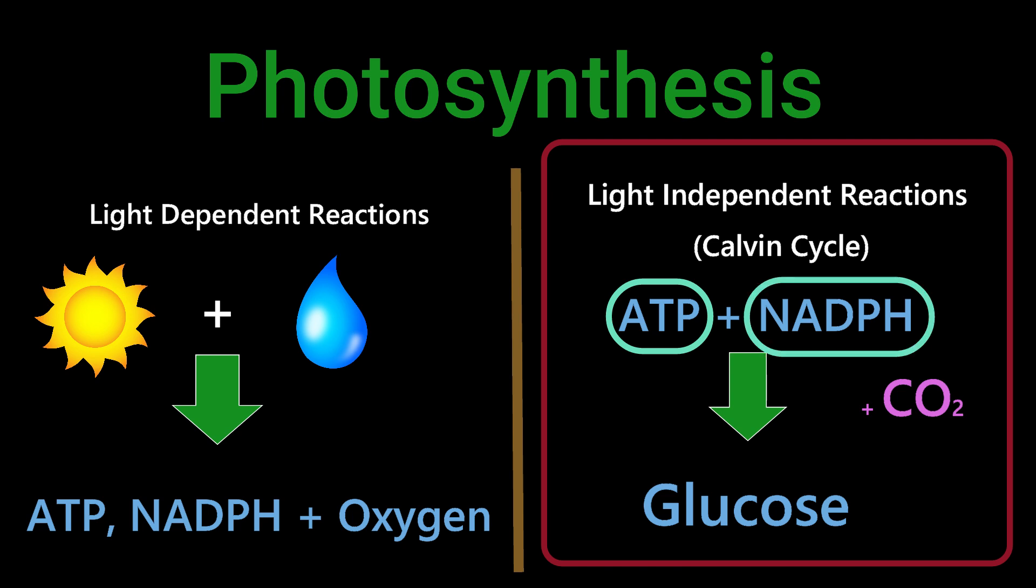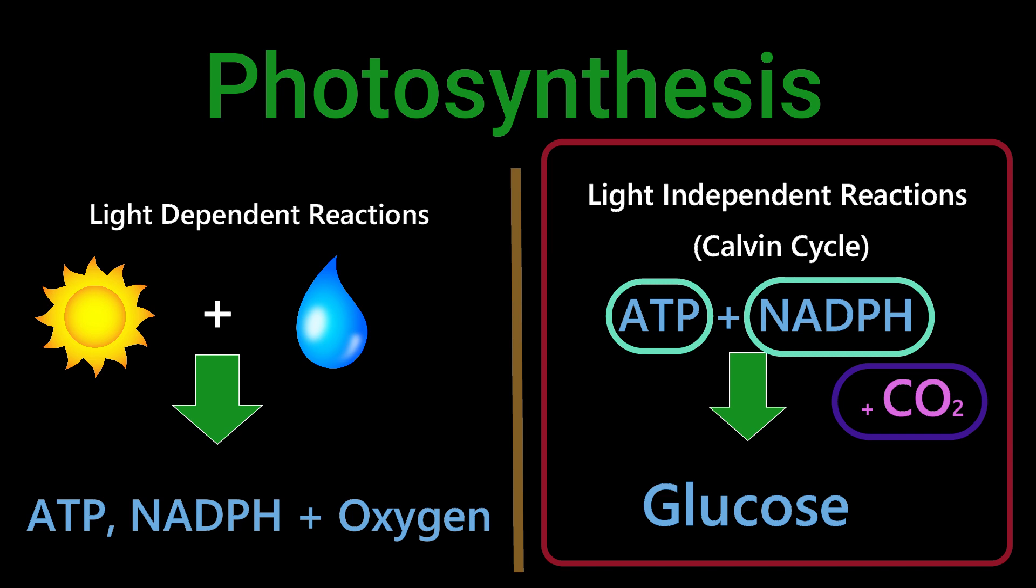In the Calvin cycle, we are going to take these two compounds and add carbon dioxide to form new products, including glucose, the main and final product of photosynthesis. Remember our photosynthesis equation? We already produced our oxygen byproduct in the light-dependent reactions, the first step of photosynthesis.